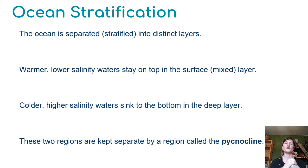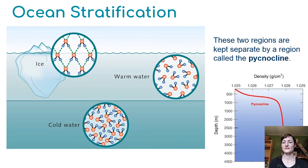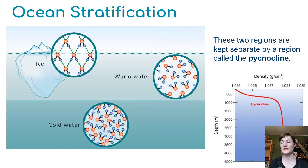The boundary between these regions is called the pycnocline — a kind of imaginary line with a very shallow area where you get a drastic change in both temperature and salinity. The graph in the lower right-hand corner shows the change in density of the water as you move deeper: higher up it's less dense, then there's a really steep change in density right at the pycnocline. That shallow transitional zone shows an incredibly rapid increase in density as you move downward, which then levels off.